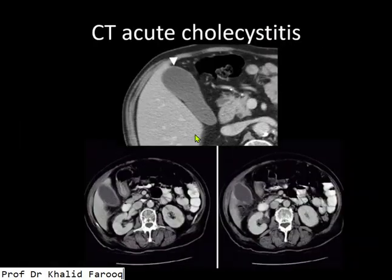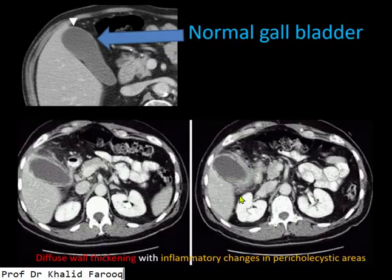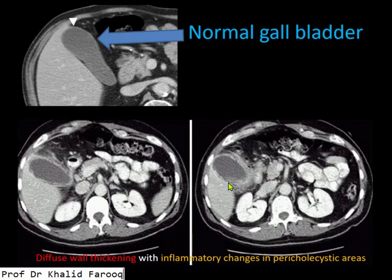Now we will discuss assessment of cholecystitis through CT scan. Again, this is a normal picture of the gallbladder on CT. Diffuse wall thickening is noted in these two images while inflammatory process is noted in the pericholecystic space, suggesting cholecystitis.